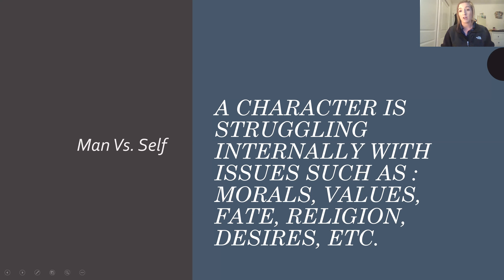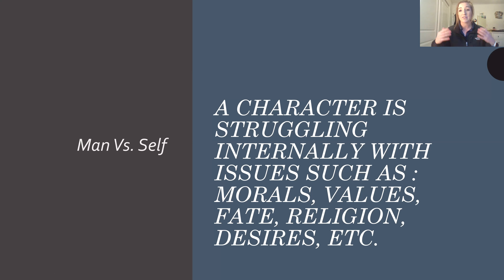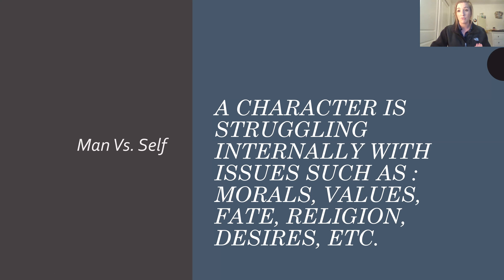The first one is man versus self. We see lots of internal conflict going on with Eliezer. The definition is a character struggling internally with issues that range from morals, values, fate, religion, desires, and anything else you could possibly struggle with internally. Your entire essay was all about man versus self — it was about man versus his own personal feelings about his religion. So that is an example of man versus self; you've already written one about it.